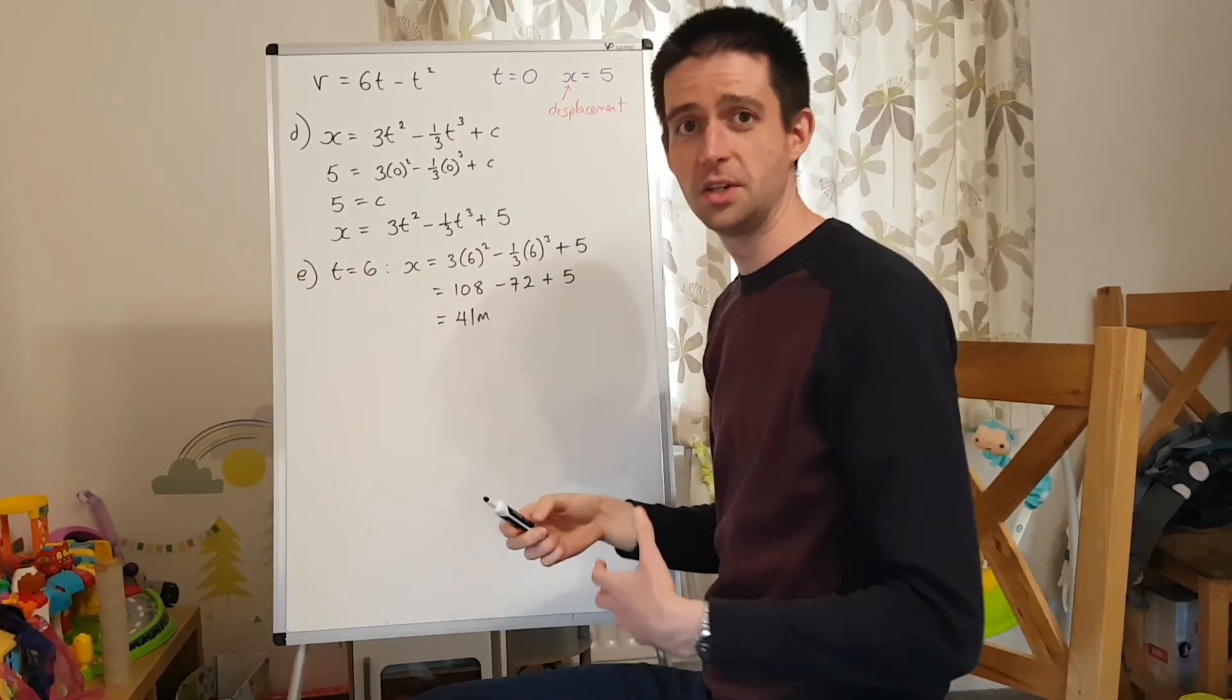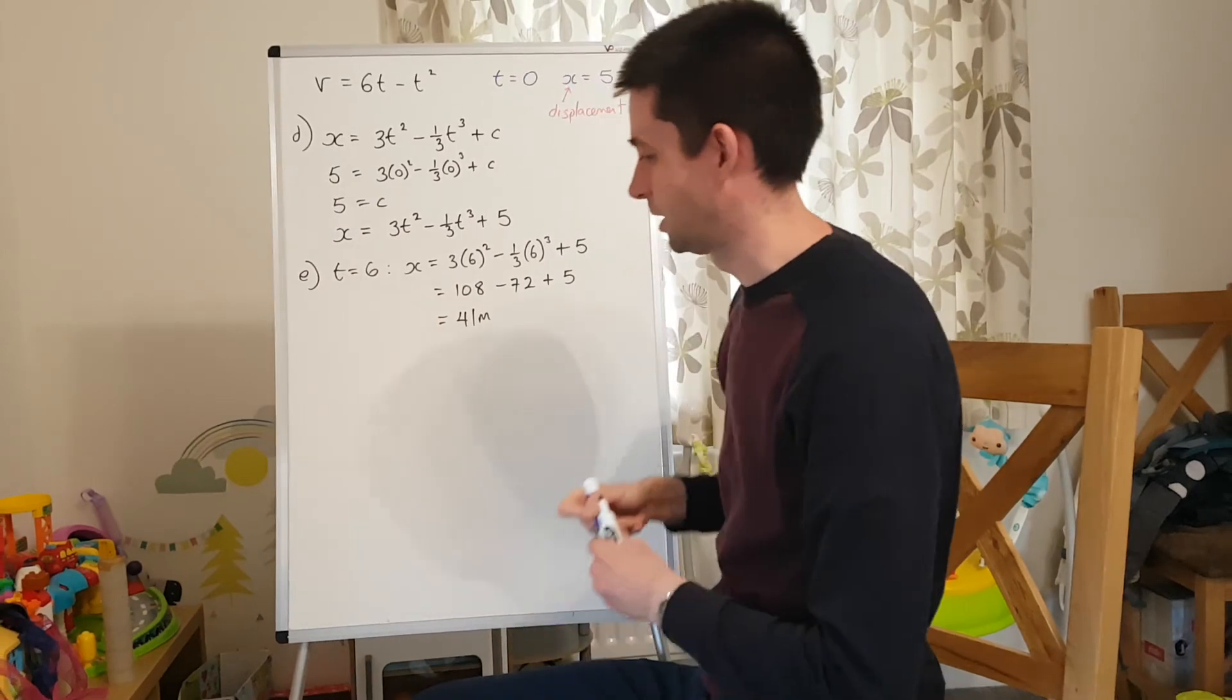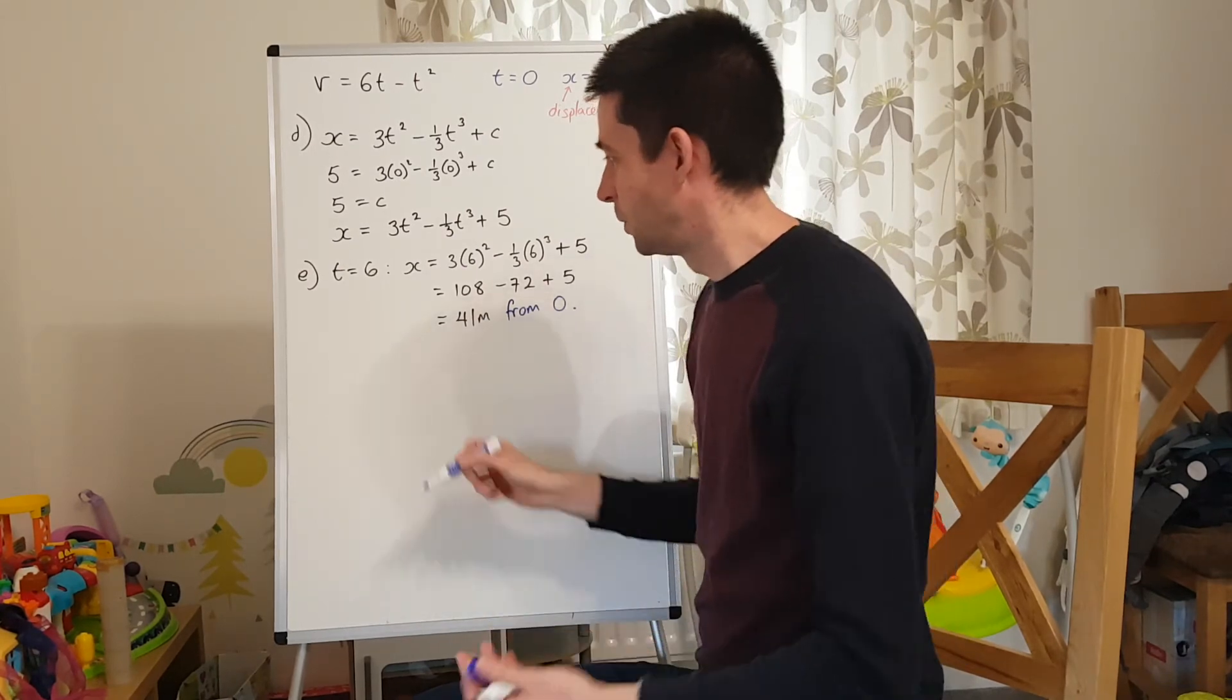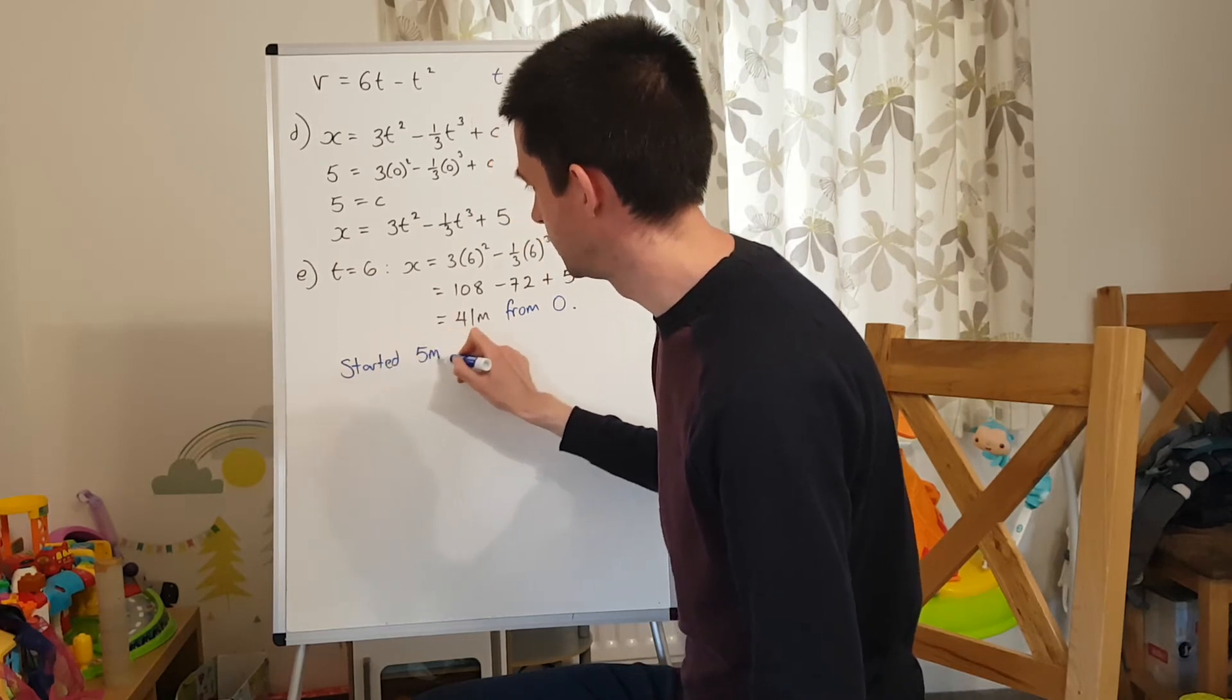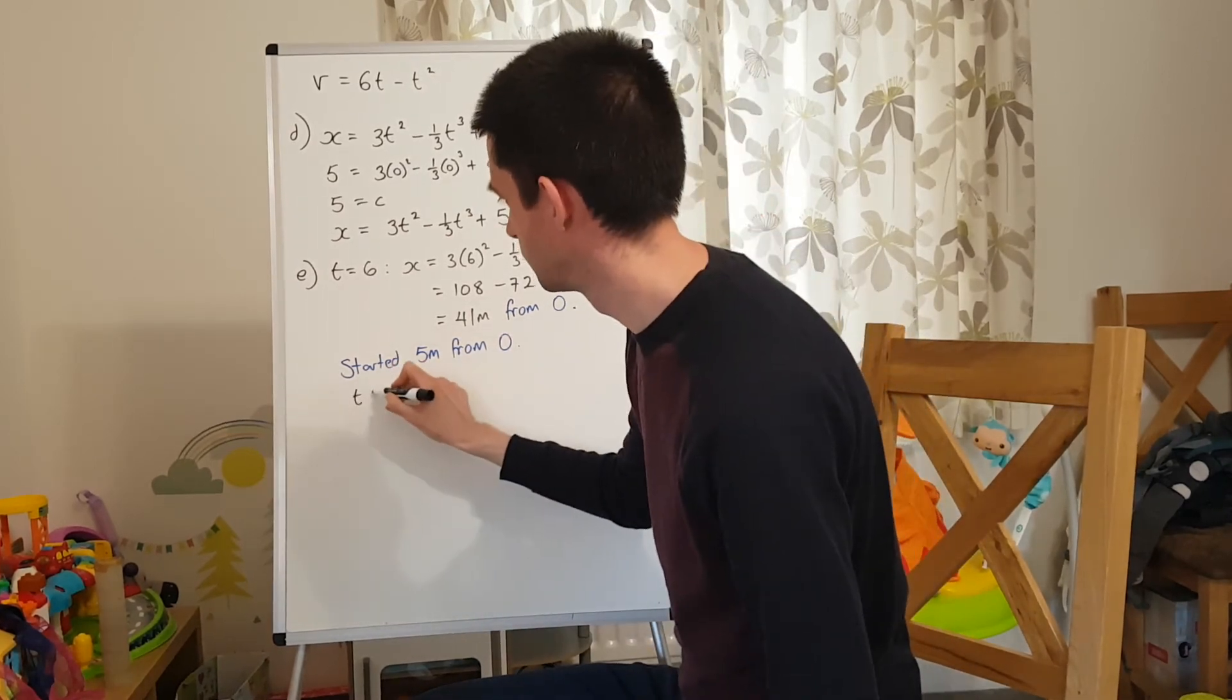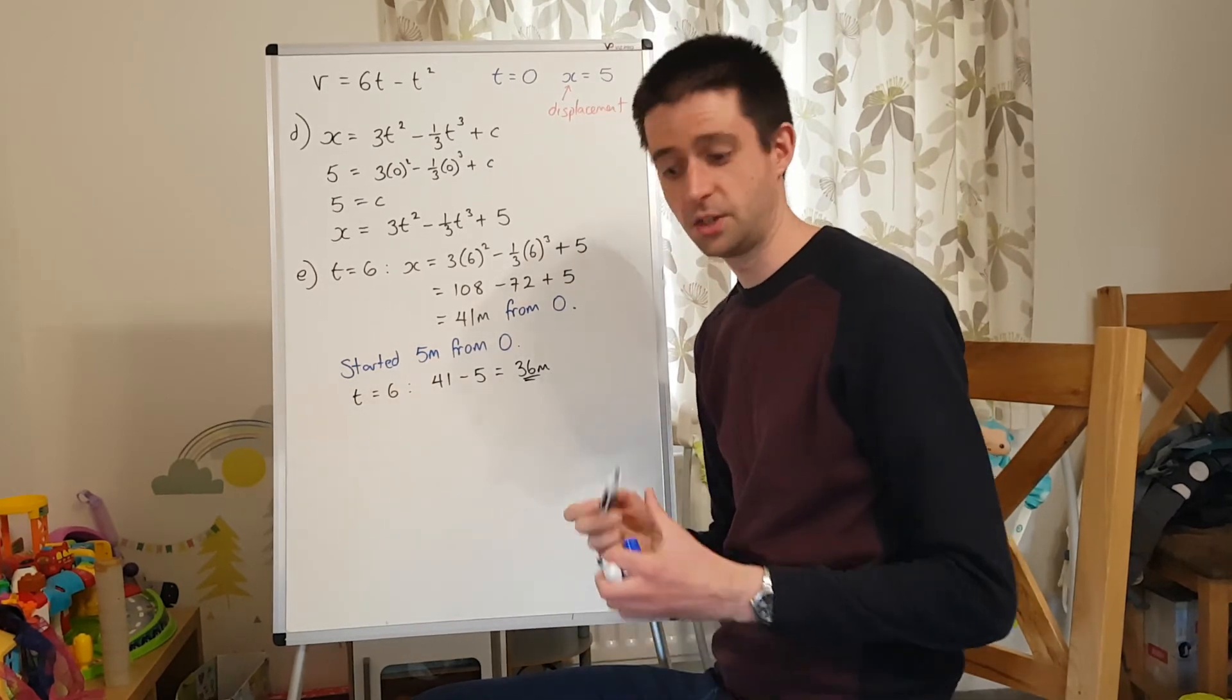41 metres is its distance from the fixed origin O. Not from where it started, it's from a fixed origin O. That is very important. That's from O. From its starting position, well, it started 5 metres from O. And therefore, when t equals 6, it's travelled 36 metres from its starting position.